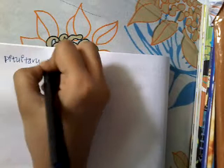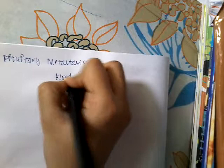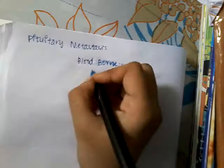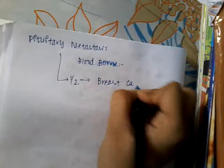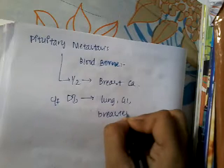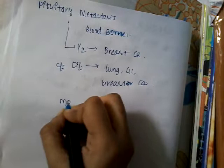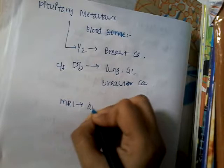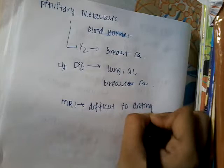Histiocytosis X is also associated with axillary skin rash. Another rare sellar mass is pituitary metastasis. These are mostly blood-borne, and half of pituitary metastases are from breast carcinoma. Diabetes insipidus can be a clinical feature seen with lung, gastrointestinal, and breast cancers. On MRI, it is very difficult to distinguish this metastatic lesion from a primary pituitary tumor.